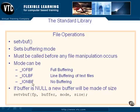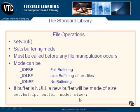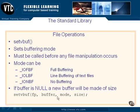And _IONBF is no buffering — no buffers will be created for the file. Now, if the buffer parameter is null, a new buffer will be created of the specified size. If you pass it a pointer to your own buffer, that's where the file buffer will be located. But if you pass null, it will create a new one for you of your specified size.